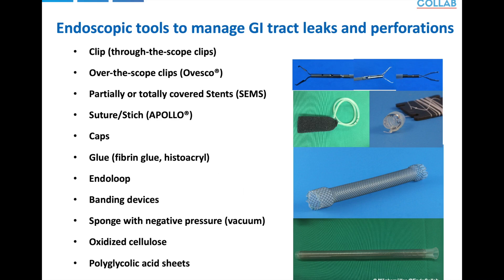We have endoscopic negative pressure therapy and vacuum therapy, which is phenomenal. We have also used polyglycolic acid sheets and oxidized cellulose, and there are reports of the Amplatzer septal occluder.